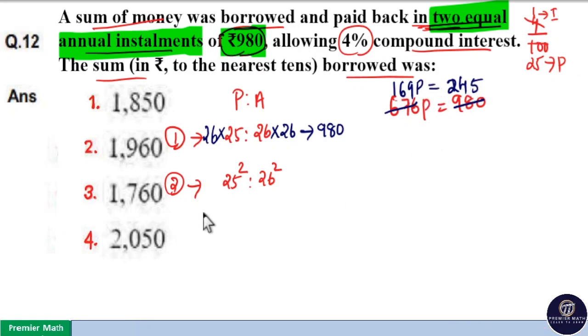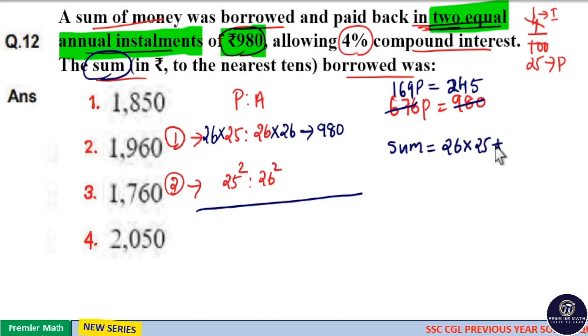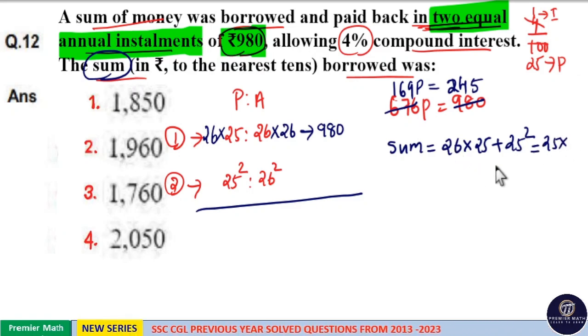Then we need to find out what is the sum. Here sum is equal to 26 into 25 plus 25 square. Now if I take 25 outside then remaining is 26 plus 25 which is equal to 51. Now 5 into 1 is 5 and 5 square plus 2 is 27 remaining 2. So 5 into 2 plus 2 is 12. So 1275 is the sum.